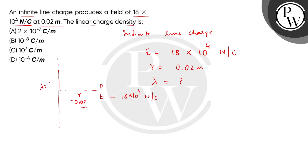We have to find lambda value. We can express E = 1 divided by 2 pi epsilon 0 multiplied by lambda divided by r.